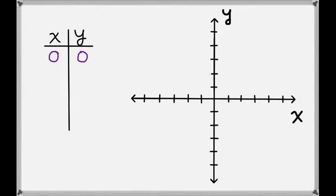Now let's look at some examples of how we plot points in the plane. First, let's look at the point (0, 0). This means that we go 0 to the left or right and 0 up or down, so we end up right in the middle. This point is sometimes called the origin.